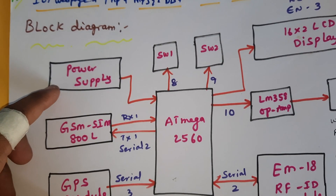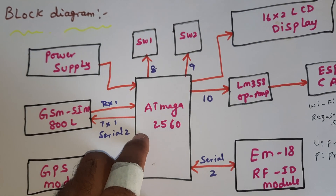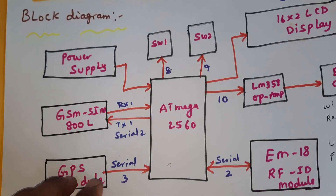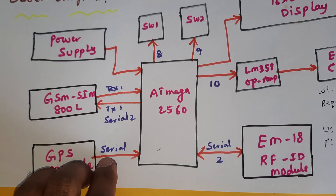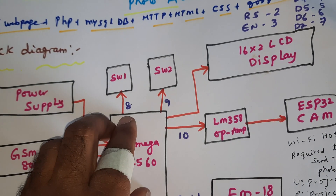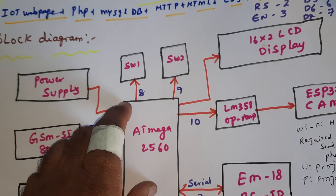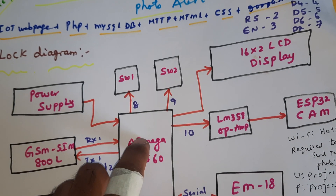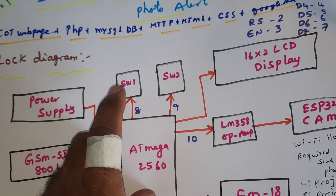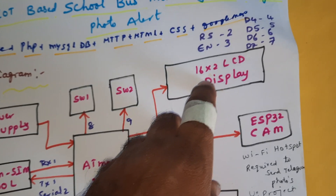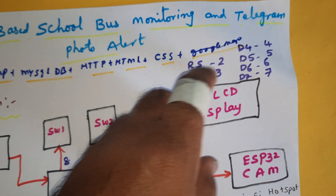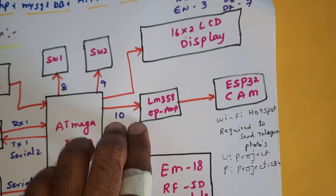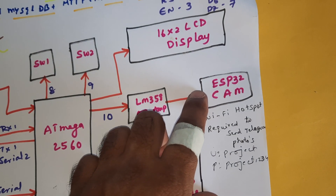The power supply module provides 5 volts. Arduino Mega 2560 with GSM SIM900A is connected via serial communication 2. GPS module is connected to serial communication 3. SOS button and switch buttons SW1 and SW2 are connected at pins 8, 9, and 16. A 16x2 LCD display is connected with RS, EN, D4, D5, D6, D7 pins. LM358 operational amplifier and ESP32 CAM module are also included.